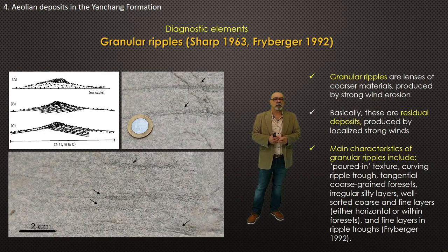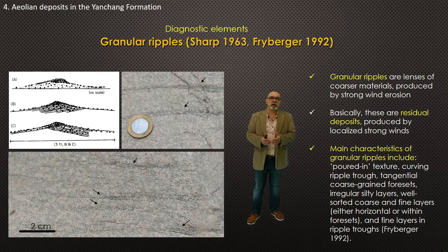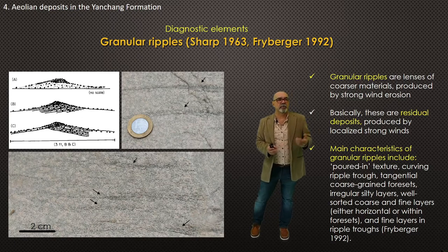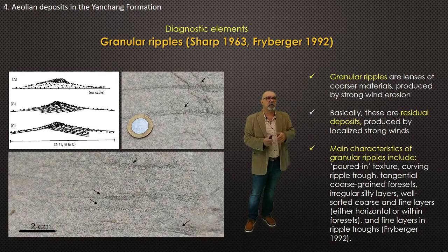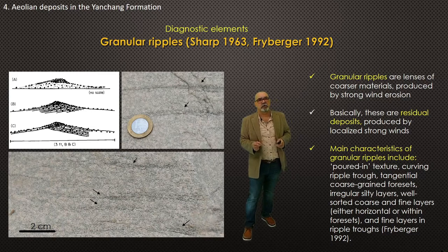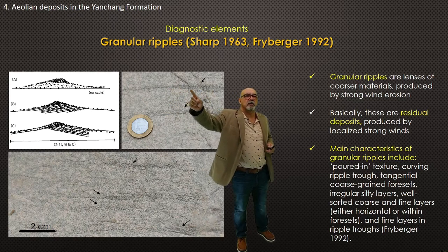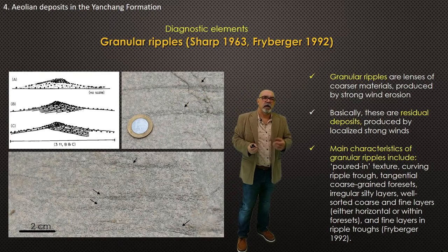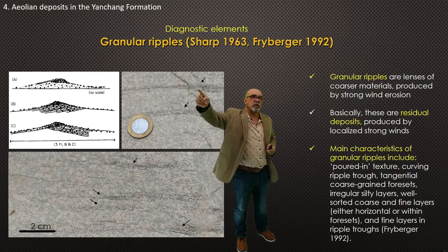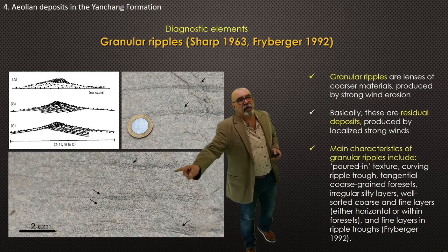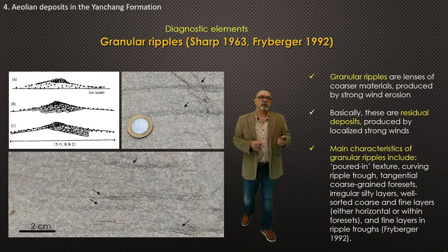Another interesting feature suggesting accumulation in an aeolian system is granule ripples. These granule ripples were defined by Sharpe and further described by Freiburger in 1992. They are basically composed of patches of coarse quartz-grained sandstones, which are related to very strong winds that remove the finest part of the sandstone and concentrate coarse quartz-grained material. Granule ripples are typical of aeolian successions, as you can see in the Ordos Basin.